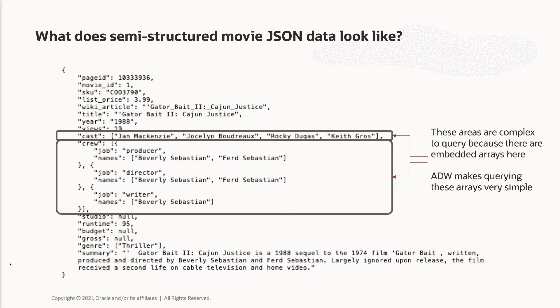As you can see here, there are different parts to this. We have one particular element — this is the data for a particular movie. That movie is called Gatorbait 2, and you can see there are different pieces of information. It was made in the year 1998. You have a cast with four key people, and this element of cast is where JSON diverges from other types of data. This is what we call an array.